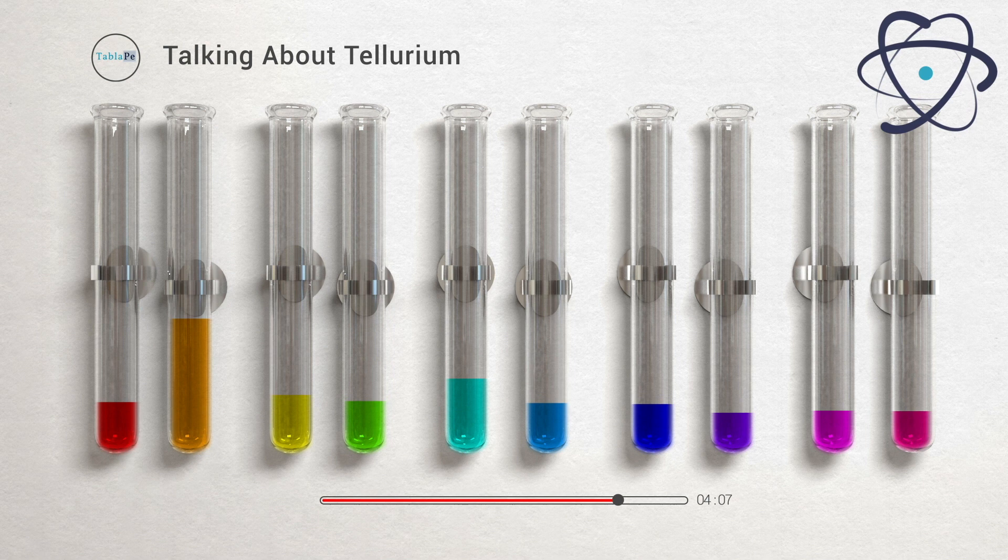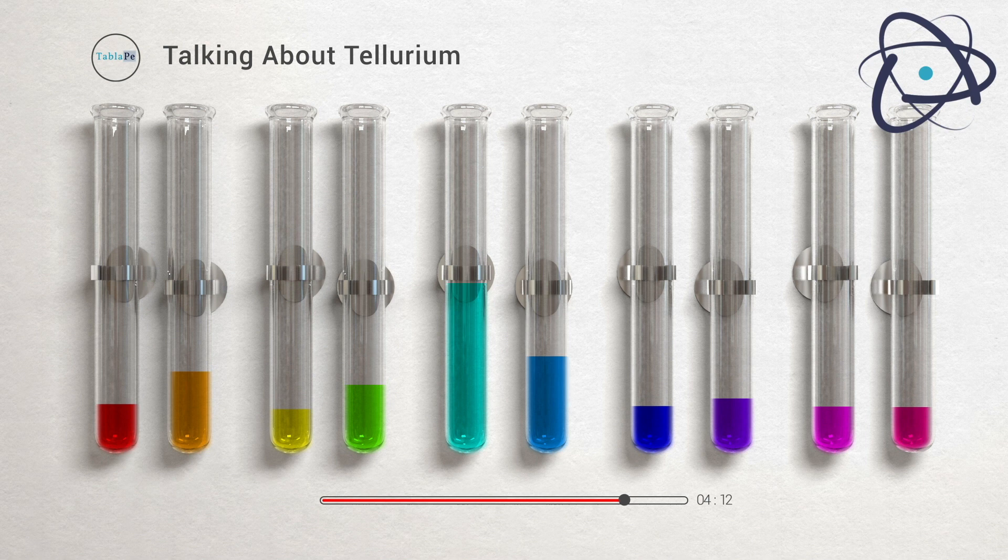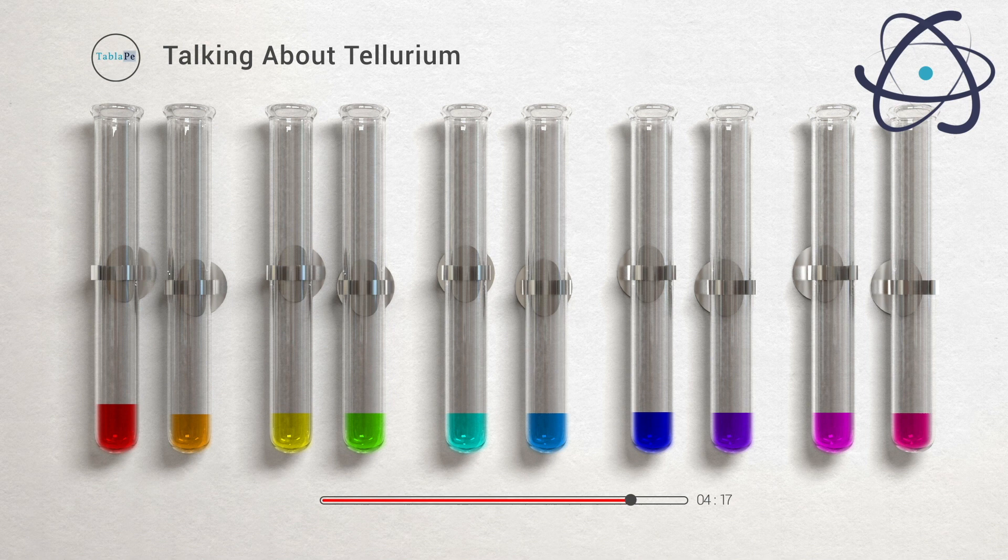It is also used as a coloring agent in glass, ceramics, porcelains, and chinaware. This element is also used as a vulcanizing agent in rubber production and as a catalyst in the production of synthetic fibers. Tellurium is used as an additive in the production of steels.